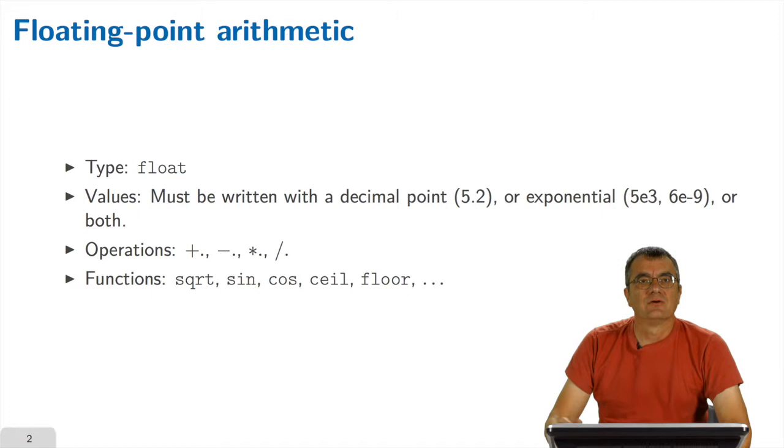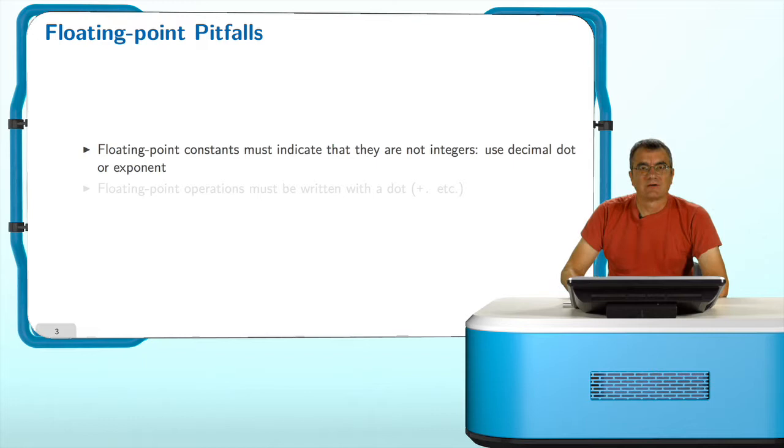You have of course all the usual functions on floating point numbers like square root, sinus, cosinus, ceiling, floor and so on. So this is very important, so let me just repeat it. You have to indicate in the writing of a constant the fact that you are using floating point numbers and not integers. So you always have to use a dot or an exponent in the constants of floating point type and you always have to use a dot in the operations working on floating point numbers.